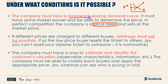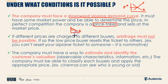Market power requires a downward sloping demand curve. This means for a small quantity I can set a high price, and if I lower the price I'll have more buyers. High price — don't expect to sell a lot. Low price — you can sell more. Typical of a downward sloping demand curve.